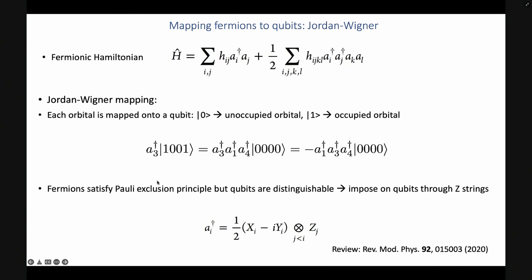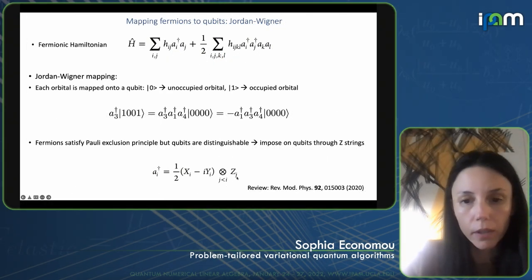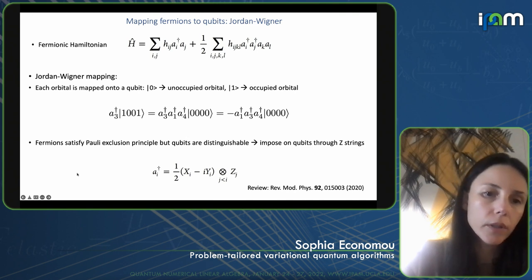The way we encode anti-commutation under the Jordan-Wigner mapping is to include Z operators with an index smaller than the orbital we're raising or lowering, following the ordering we decided for our spin orbitals. By doing that, we pick up minus signs if that orbital is occupied, which exactly mimics the raising and lowering operators of fermions.